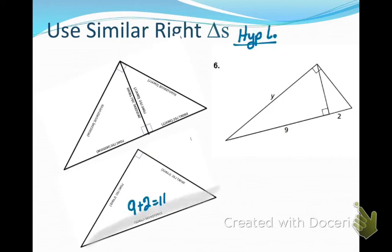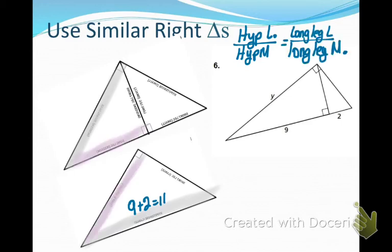But if I add those two together, I would have the hypotenuse of my large triangle. And I could compare that to the hypotenuse of the medium triangle, which is y, which is what I'm trying to solve for. That has to be in the same ratio as the long side of my large triangle is to the long leg of my medium triangle.